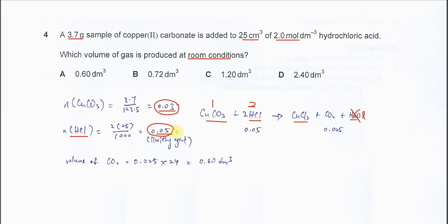Okay, so after that, we have to use the mol of limiting agent for the formation of gas. If now we have 0.05 mol of HCl, therefore, it will form 0.025 mol of CO2 because their mol ratio is 1 to 2. Sorry, 2 to 1.